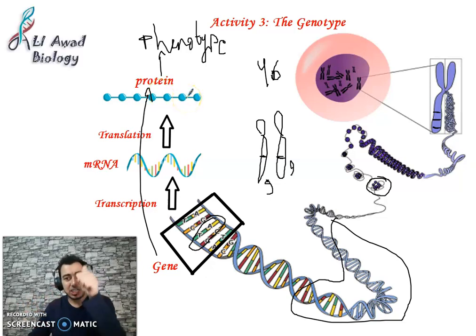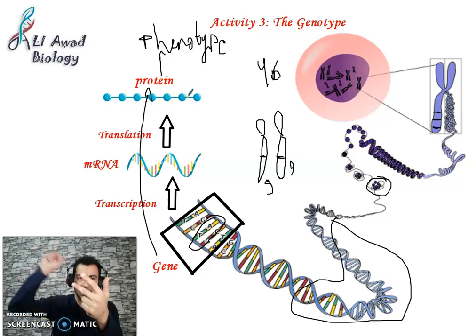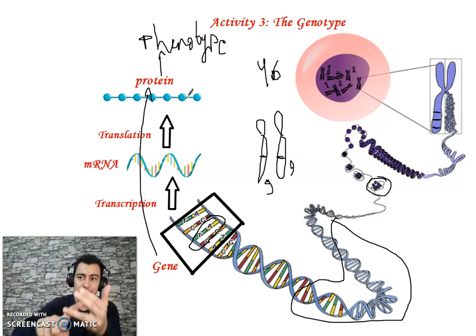So when I say gene, it means messenger RNA, which means protein, which means phenotype. Gene → mRNA → protein → phenotype.